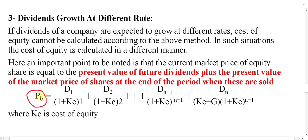In this formula it is assumed that the current market price of the share will be given, dividends for a number of years will be given, and the growth rate G will also be given. The cost of equity, Ke, will not be given in the question — you have to find it using the trial and error method. The trial and error method says that both sides of the equation must be equal.